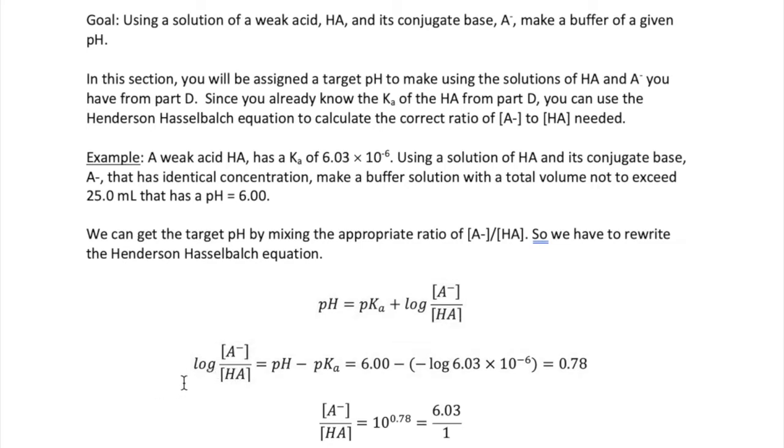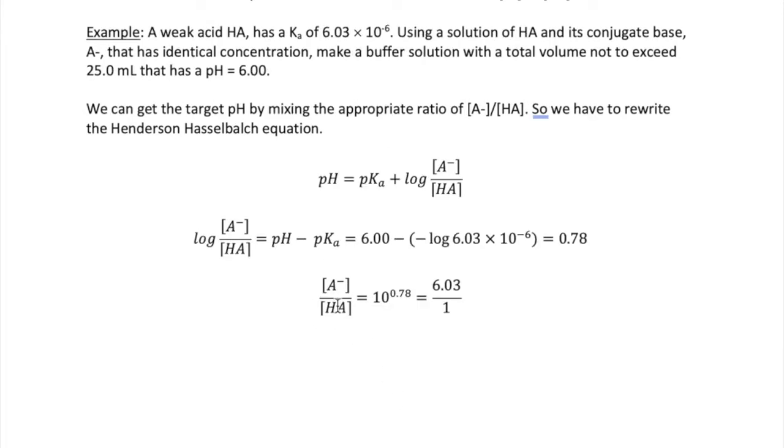The log of A minus over HA is equal to pH minus pKa. Calculating this using these values, we get 0.78. Solving for A minus over HA gives us a ratio of 6.03 to 1, meaning that for every one part of HA, we need 6.03 parts of A minus.